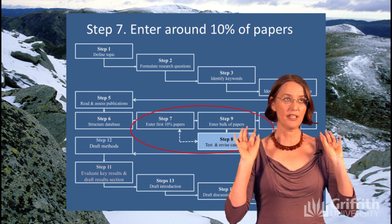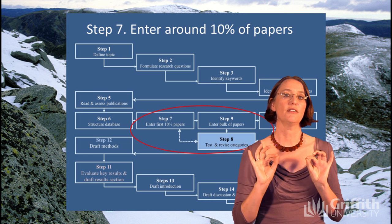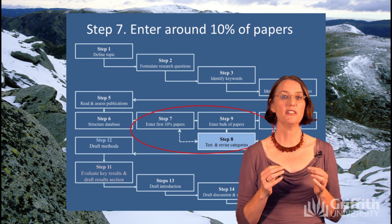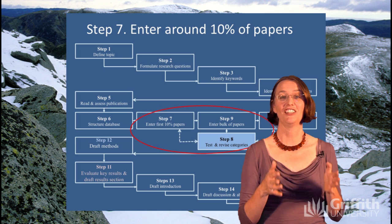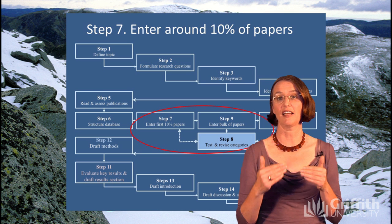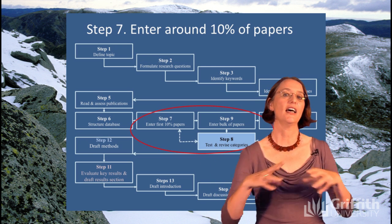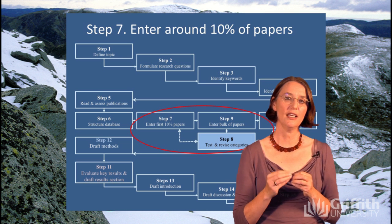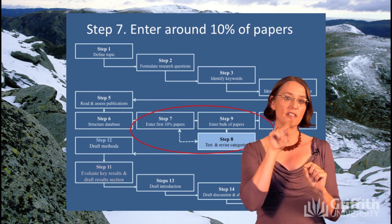We suggest you carefully think about your categories, set up your database, and then enter about 10% of the data - or about 10, 15, or 20 papers depending on how many you have. The reason is that you'll often have categories in mind, but when you actually do it you find it's not like that - there are extra things you haven't found, categories aren't as easy to apply, you might need subcategories. We find it's really worthwhile testing how well your database works, making sure it's realistic, and modifying at that point. The diagram shows an iterative process between defining categories, entering data, and revising them.